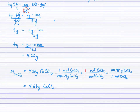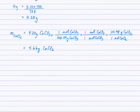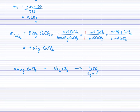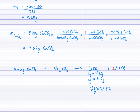Now that I know the theoretical yield, I use mass to moles to moles to mass to calculate the mass of calcium chloride. Moving from mass of calcium carbonate to moles of calcium carbonate, to moles of calcium chloride, to grams of calcium chloride — that's what was asked for. These three examples used the same equation: 4.66 g of calcium chloride reacted, the theoretical yield of calcium carbonate was 4.20 g, but the actual yield was only 3.10 g, giving 73.8% yield. Remember: actual yield divided by theoretical yield times 100 gives percent yield.